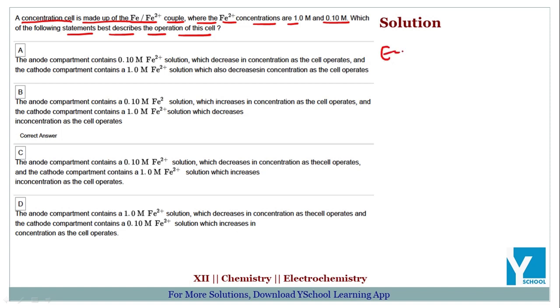For a concentration cell, the Nernst equation gives E = E° - 0.059 over n log of c1 over c2. Now what is c1 and what is c2? c1 corresponds to lower concentration.